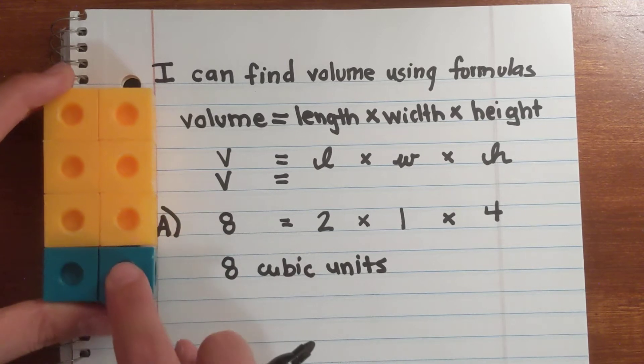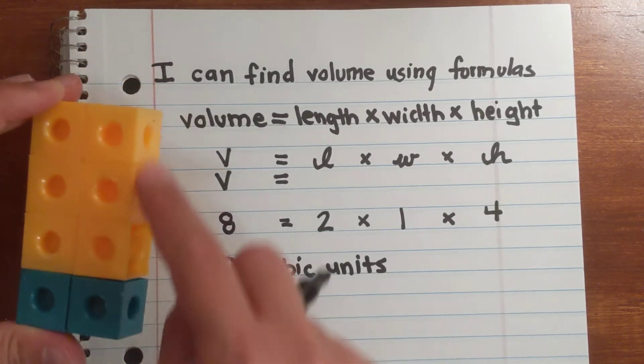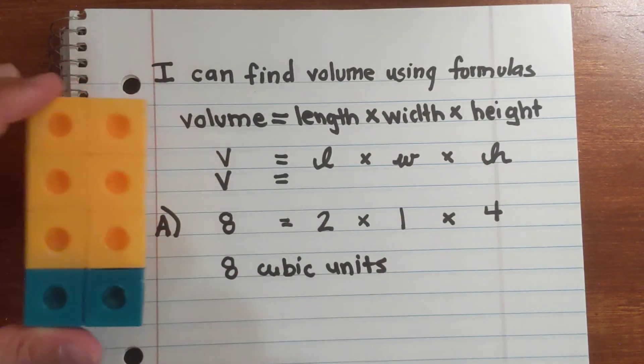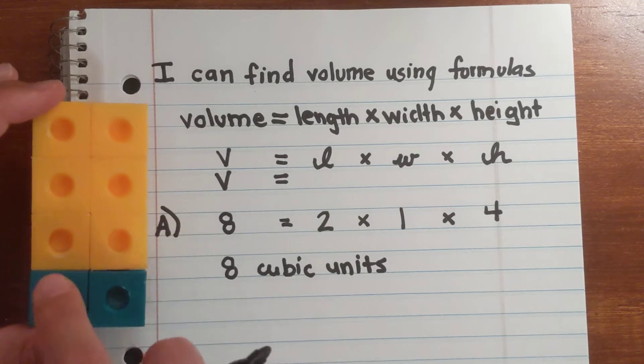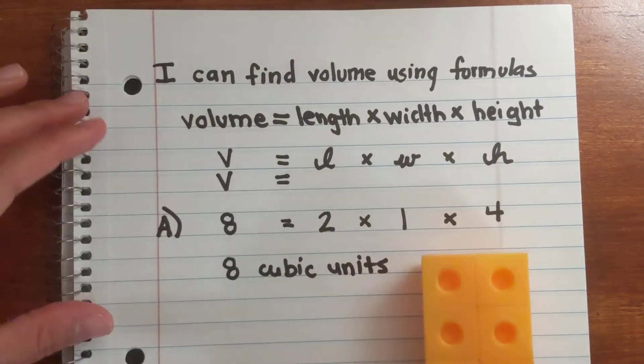So the eight cubic units is the volume for this 3D figure. It's the length two, times the width one, times the height four — eight cubic units. And you can count them: one, two, three, four, five, six, seven, eight. Makes sense.